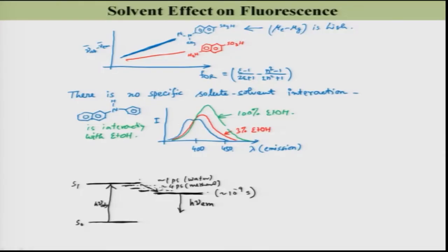But if you use a viscous solvent — like ionic liquids or other viscous solvents — then emission will also get contributions from different intermediate states. With time, the emission spectra will shift towards longer wavelength, the red side, as solvent reorientation progressively stabilizes the excited state. So if you can measure the emission spectra in a time-resolved mode, you will observe this gradual red shift.